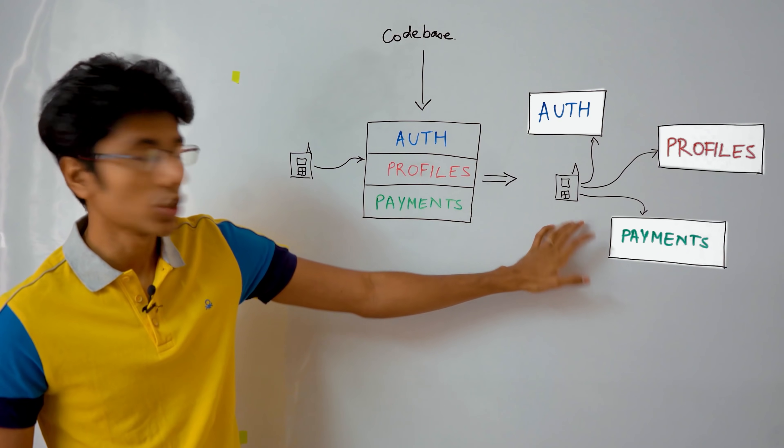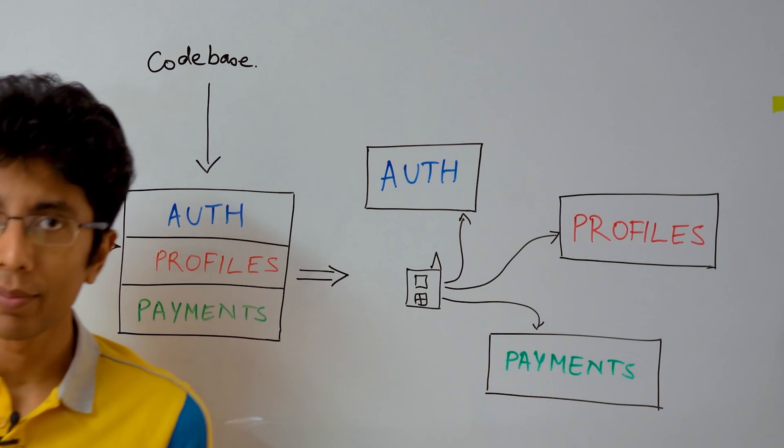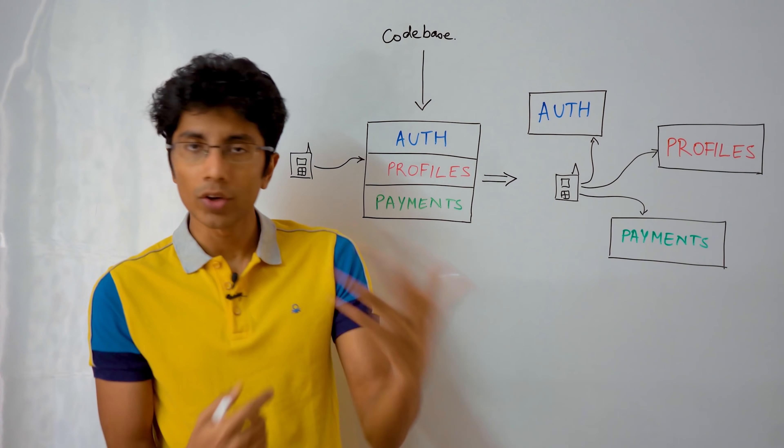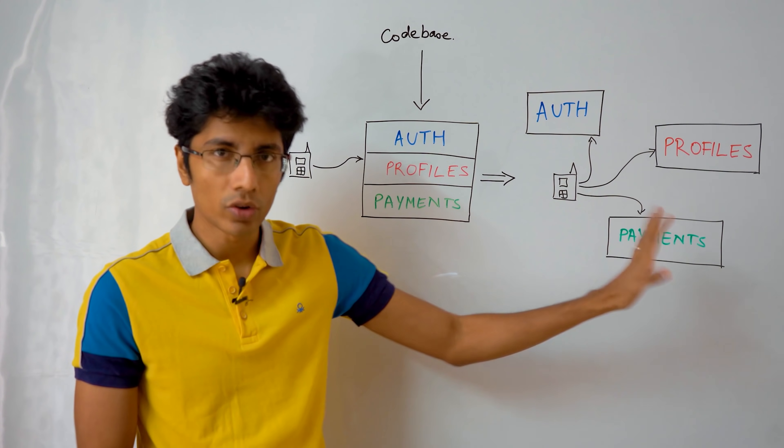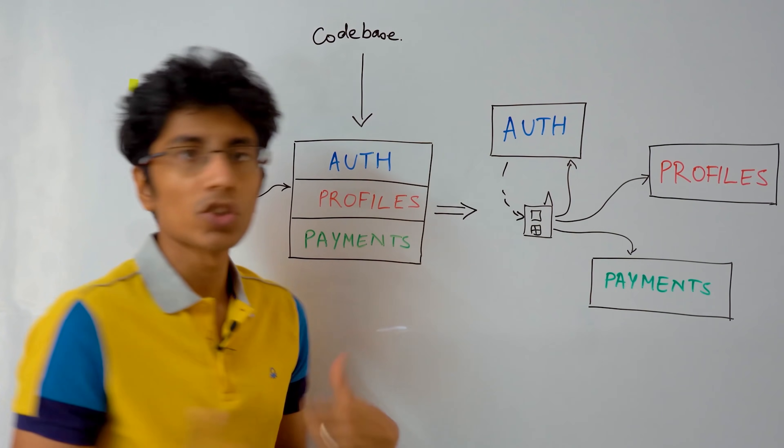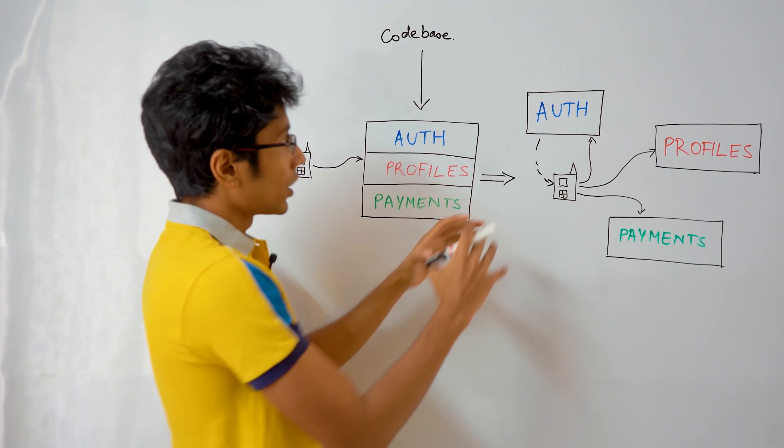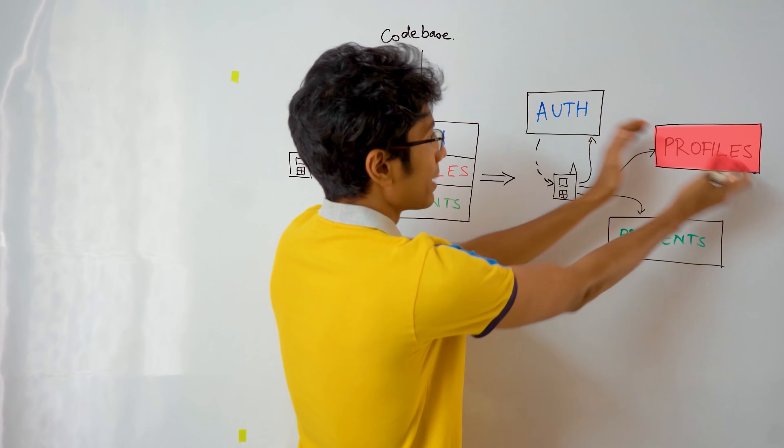While in the microservice architecture you have cell phones which connect to different services based on what the requirement is. So let's say you're logging into Google. Does the payment service in Google need to know about what you're doing? No, not really. You just need to go to the authentication service and when it gives you a response your authentication is done. So you're seeing that the code has been broken into pieces and converted into services themselves.